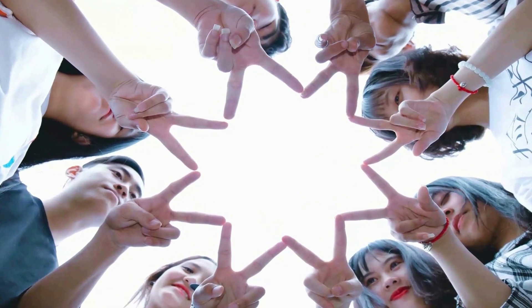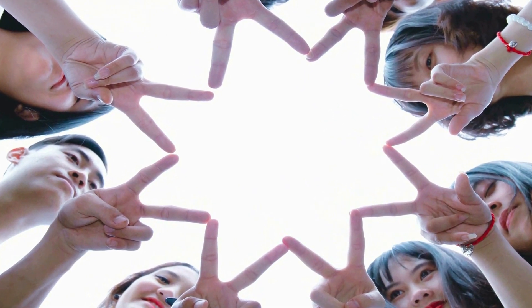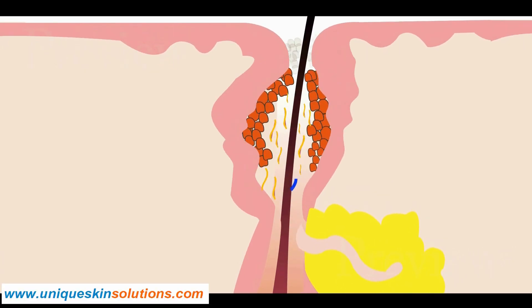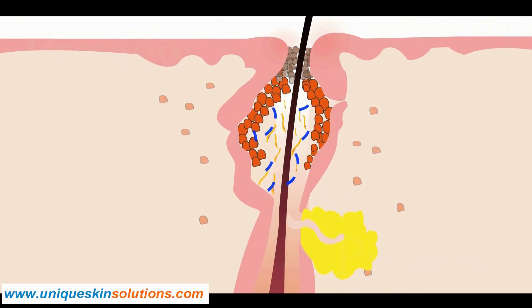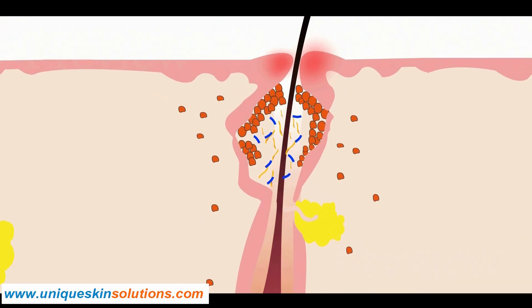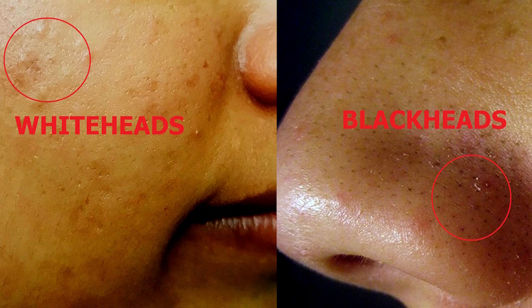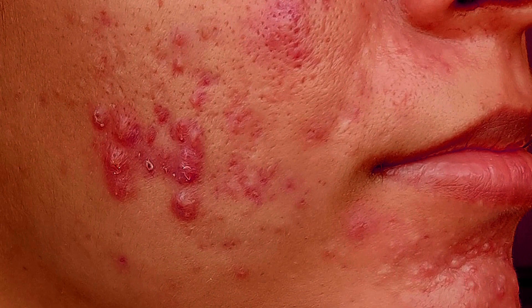Acne or pimple is a common skin disease that consists of skin blemishes. It can appear as white, black, or red spots on the face, back, and chest. Acne is very common during the teen years, aged between 12 to 25 years. The evolution of acne depends on the extent of inflammation. There are mainly three types of presentations: comedones, papular/pustular acne, and nodular cystic acne.